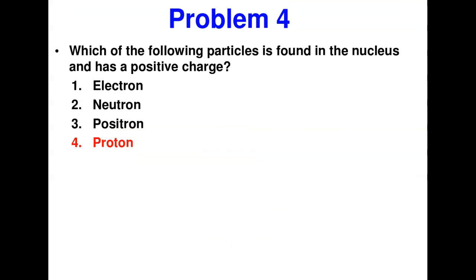Which of the following particles is found inside the nucleus of an atom and has a positive charge? By definition, this must be a proton — the electron is negatively charged and located outside, the neutron has no charge. So the proton fits this definition and that is the answer.